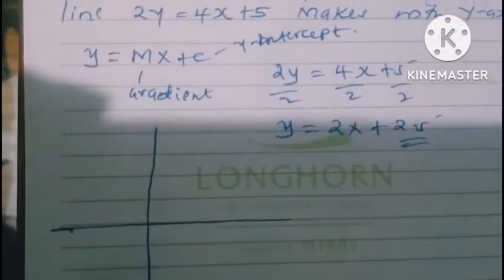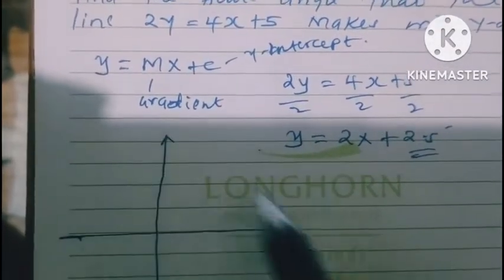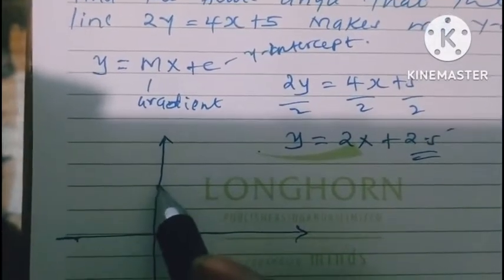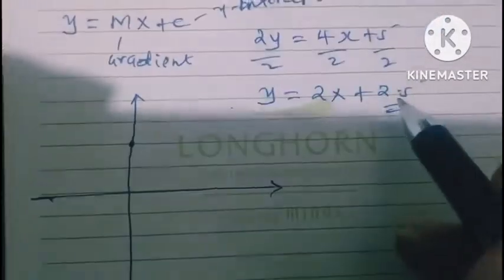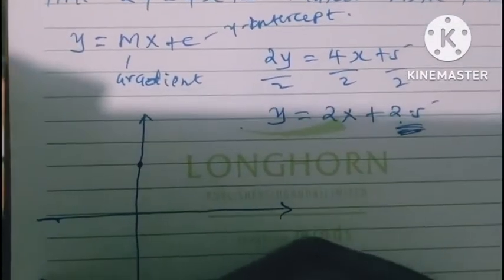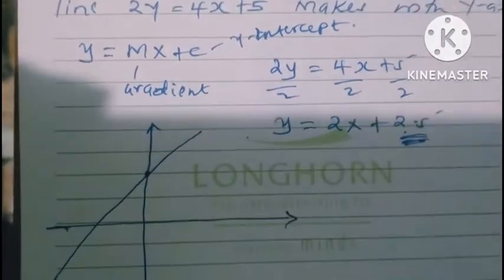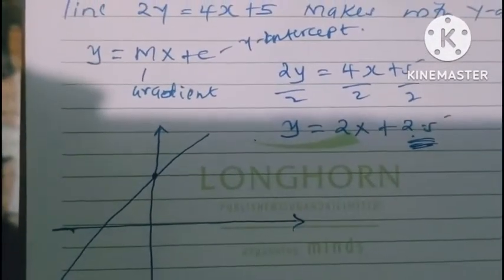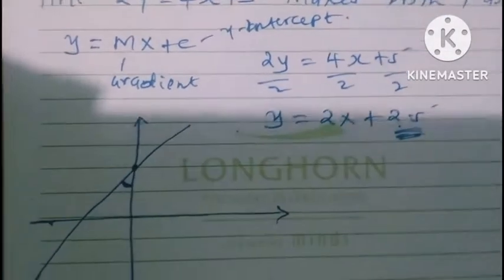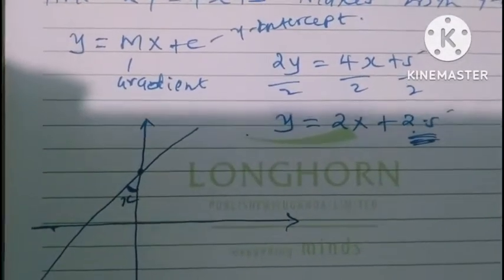So, one of the y-intercepts is whereby this line will cross the y-axis, so let us assume that this is the point 2.5, the y-intercept. So, this line, since it has positive gradient, it seems it is rising in such a manner. So, that's a line, so the question is asking us to find out this angle up there, that angle x, let us call that angle x.